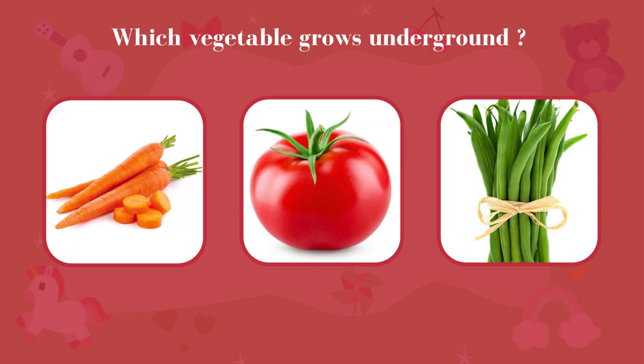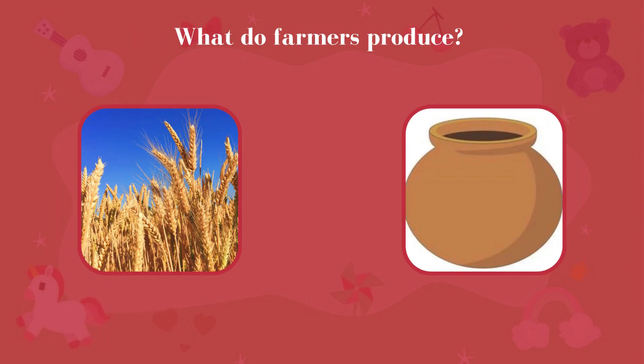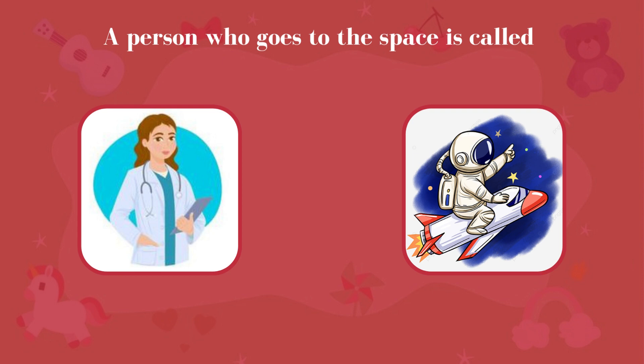Which vegetable grows underground? Carrot. What do farmers produce? Crops. A person who goes to space is called Astronaut.